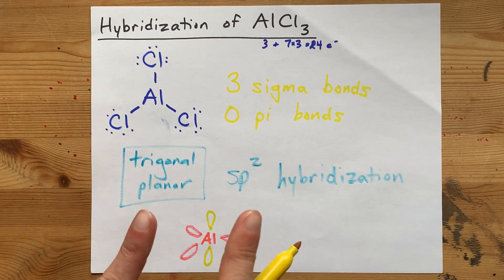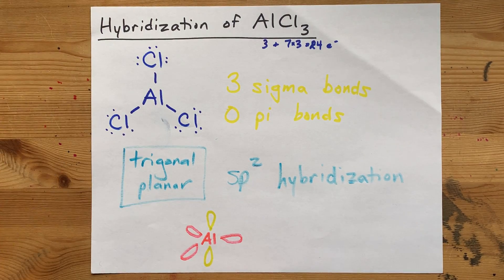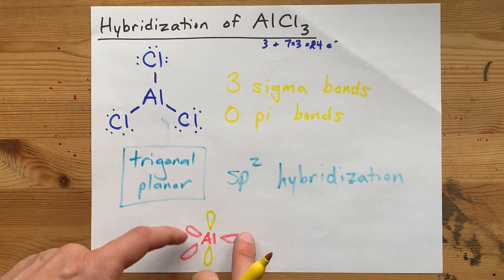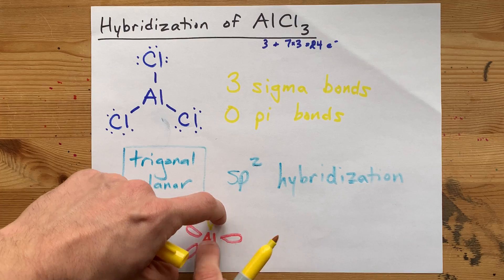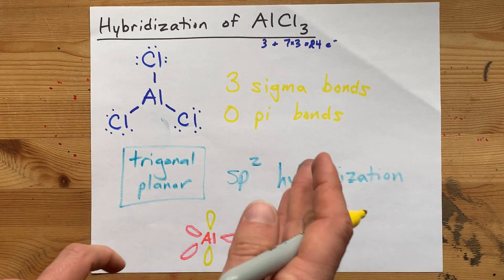And as well, there is an unhybridized 2p orbital that has no electrons inside of it. It's empty. That corresponds to the lack of a lone pair on the aluminum here. And repulsion between that orbital and these three - maybe it's not repulsion, but this configuration helps you explain the trigonal planar shape of the AlCl3 molecule.